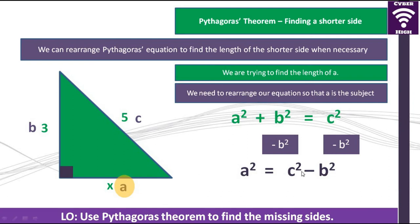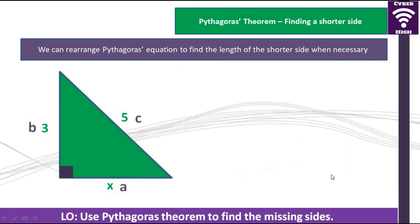Given this arrangement, we are now going to substitute 3 and 5 in our expression to find our answer. To substitute, we'll have 5 squared minus 3 squared, which gives us 25 minus 9. So a squared is equal to 16.